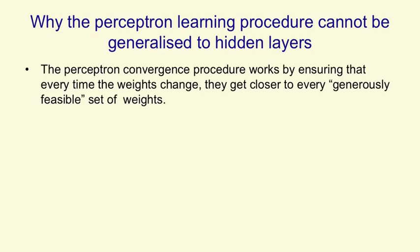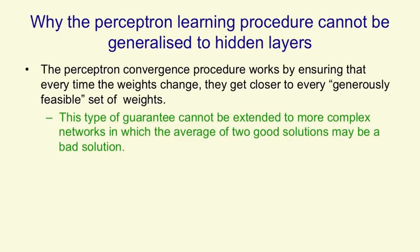The perceptron convergence procedure works by ensuring that when we change the weights, we get closer to a good set of weights. That type of guarantee cannot be extended to more complex networks, because when you average two good sets of weights, you might get a bad set of weights.